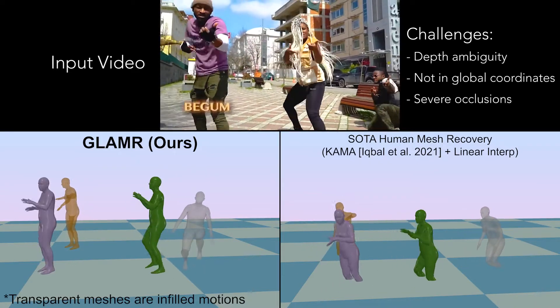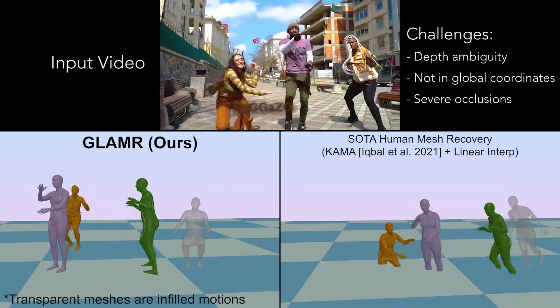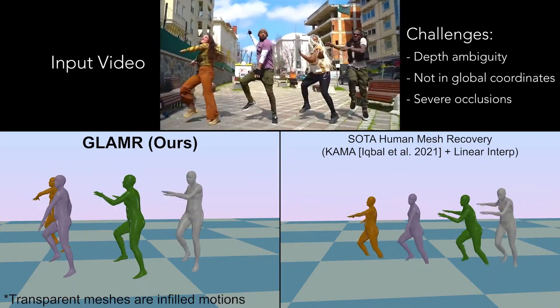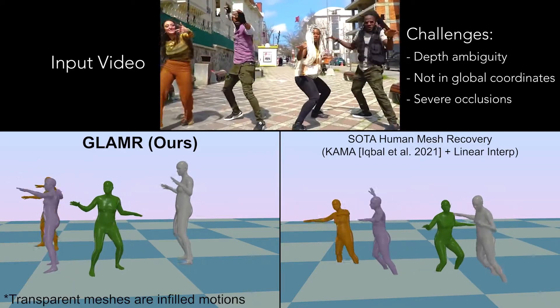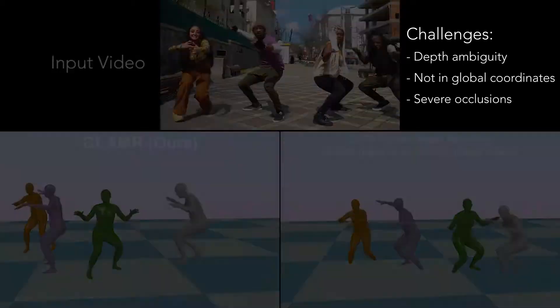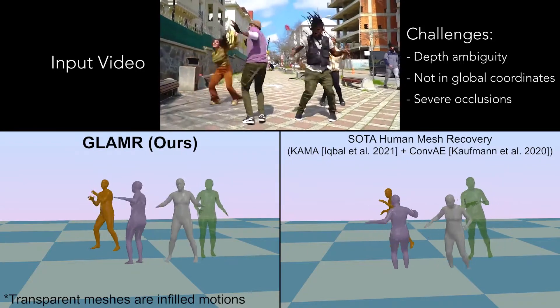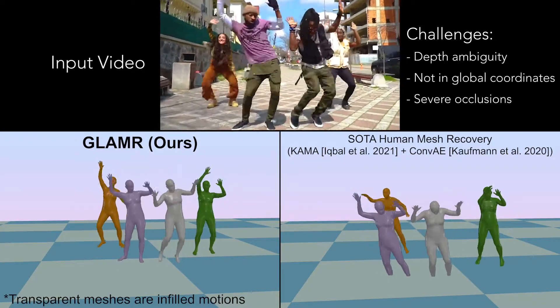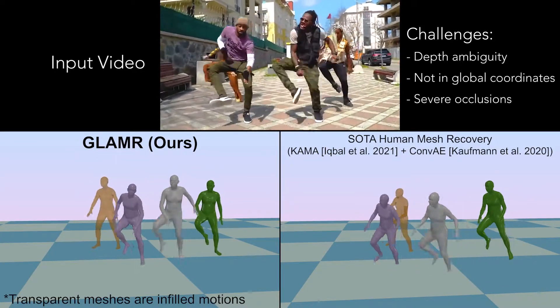We can see that GLAMR produces smooth and accurate human motions in a consistent global coordinate system. Furthermore, GLAMR also infills more natural motions for occluded humans.